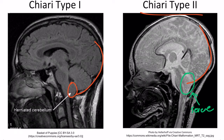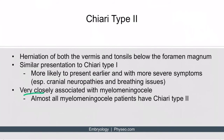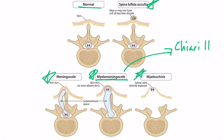With this severe downward displacement of the cerebellar tonsils and the vermis, you get more severe problems — mainly cranial neuropathies involving cranial nerves 9 and 10, which can cause severe breathing abnormalities such as apnea. An important association is that Chiari type two malformations are very closely linked to myelomeningocele; in fact, almost all myelomeningocele patients have a Chiari type two malformation. Whenever you see or think of a myelomeningocele, think of Chiari type two malformations.